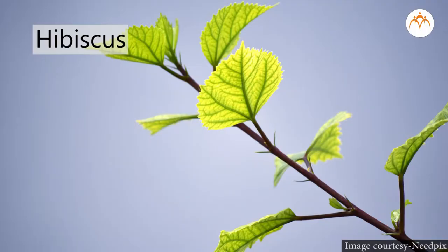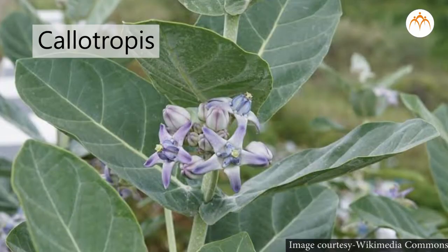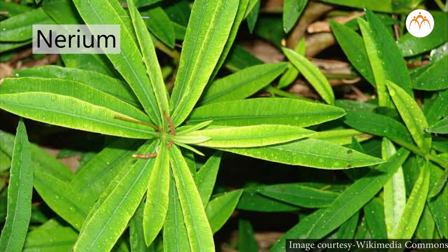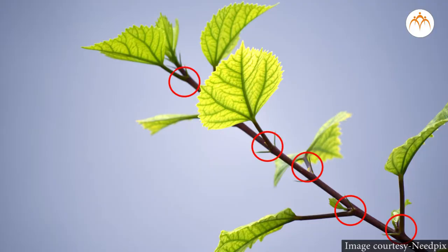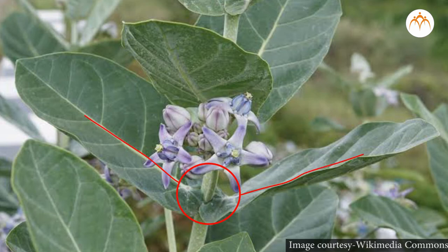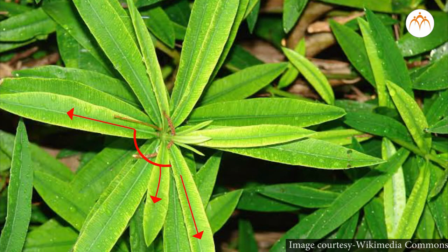Now I will show more pictures of leaves and tell you their names: hibiscus, mango, calotropis, jasmine, and nerium. Observe these images carefully and focus on the nodes. In hibiscus and mango, there is a single leaf produced at each node. In calotropis and jasmine, there are two leaves at each node. In nerium, more than two leaves are present at each node, arranged in a circle around the stem.